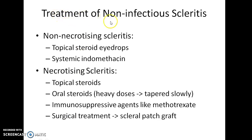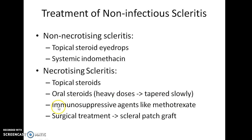Now coming to the treatment of non-infectious scleritis. In non-necrotizing non-infectious scleritis, topical steroid eye drops and systemic indomethacin are given. In necrotizing scleritis, topical steroids are given along with oral steroids started at high doses and then tapered slowly. In non-responsive cases, immunosuppressive agents like methotrexate can be given. Surgical treatment can be done in the form of a scleral patch graft.